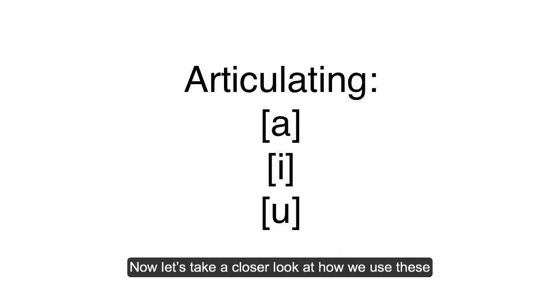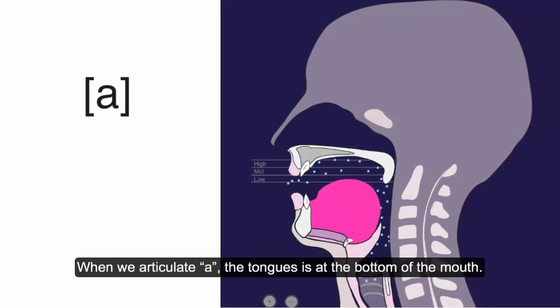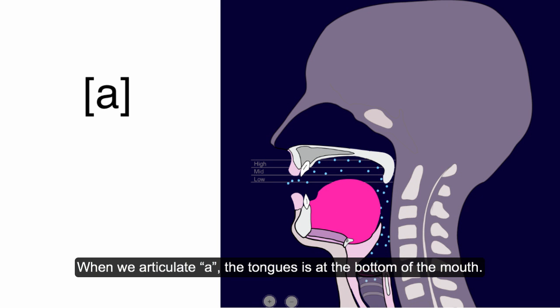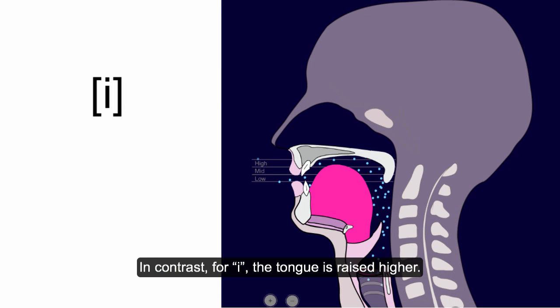Now let's take a closer look at how we use these parts to produce speech sounds. When we articulate a, the tongue is at the bottom of the mouth. In contrast, for i, the tongue is raised higher.